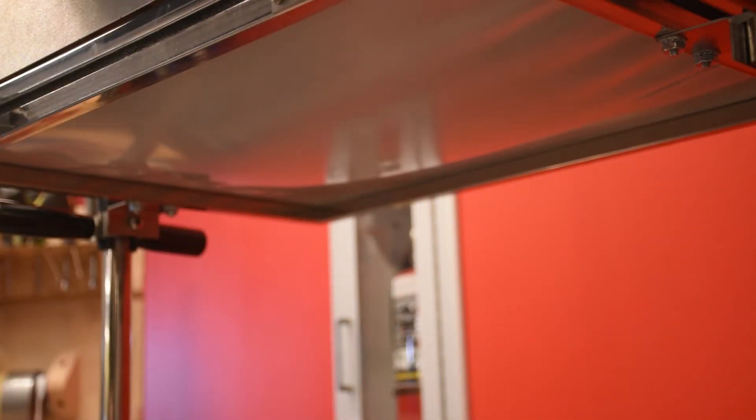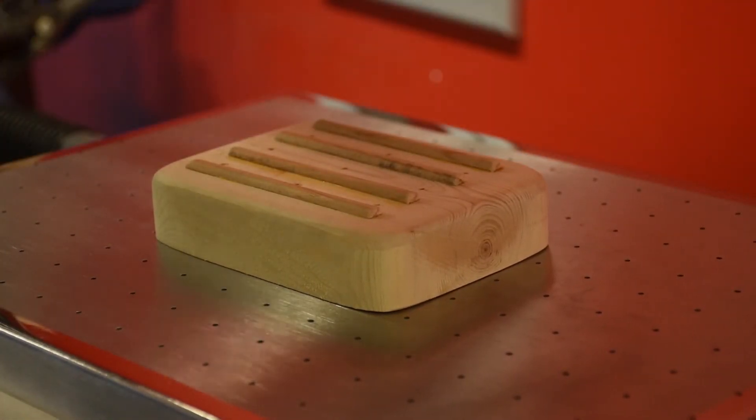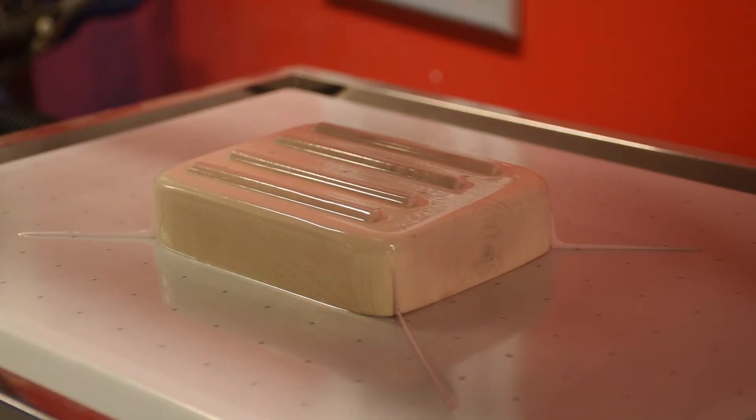I loaded some O23 plastic into the vacuum former and the heat was on. Once it was satisfactorily saggy, I turned on the suction and slammed it down over my mold and instantly I had a grow tray.